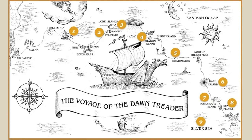The crew continues forward and makes it to Dark Island, where everything is just pitch black — they can't see anything. They encounter Lord Roop, who is now raving mad because he's been tormented by his nightmares on this island. He tells them that at this island all of your dreams come true — not your daydreams, but your actual dreams. That leads to a sense of horror among the crew. They keep going in circles, don't know how to get out. In an act of desperation they pray — Lucy prays — and there's a narrow beam of light that comes. At first it looks like a narrow light, then like a cross, but as it gets closer they realize it's an albatross. Lucy hears the albatross whisper to her in the voice of Aslan: 'Courage, dear heart.' The albatross leads them out of the darkness and into the daylight.